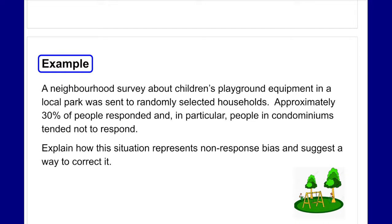In an example, a neighborhood survey about children's playground equipment in a local park was sent to randomly selected households. Approximately 30 percent of people responded, and in particular, people in condominiums tended not to respond. Non-response bias means a certain group is not represented because they didn't participate. In this case, people in condos tended not to respond, and only 30 percent of surveys were completed — a low response rate.